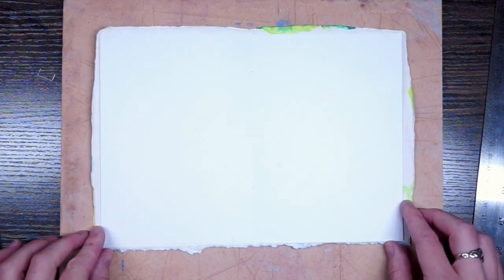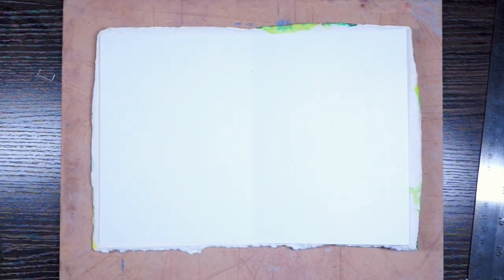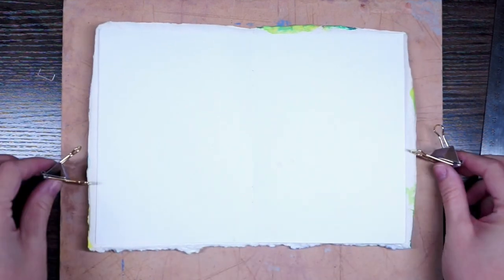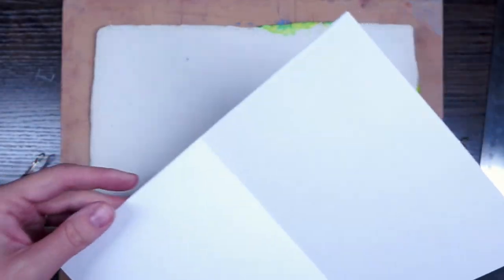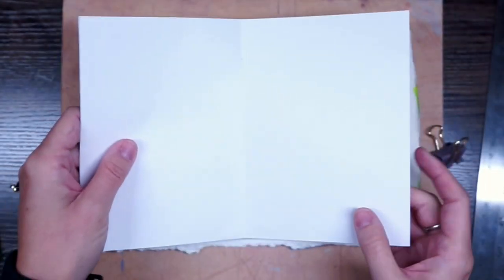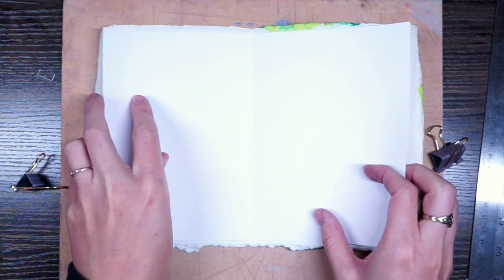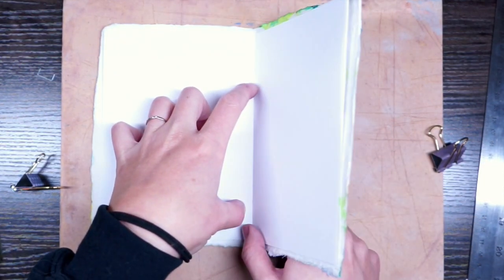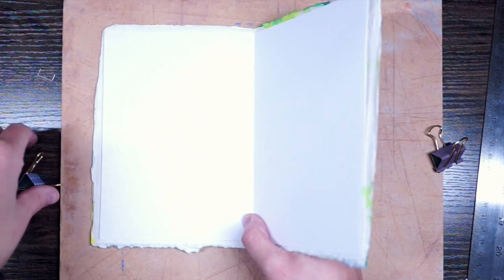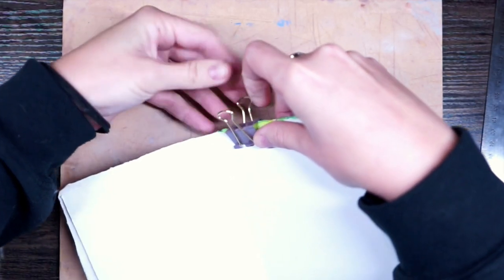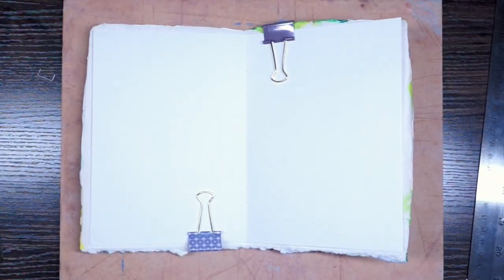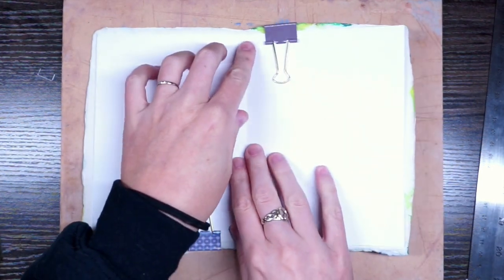Now I need to make sure that my paper doesn't move while I'm putting the holes in, so I'm actually going to grab some binder clips to hold it in place. I have some binder clips. I'm just going to put one on the top and one on the bottom. I need to realign my signature here, make sure that's good, and then make sure it's right in the middle of my little booklet. I'm going to hold it tightly in place, and I'm going to clamp on the top and on the bottom. I'm going to do it on either side of the fold to keep it in place. That should keep my paper in place while I'm poking the holes.